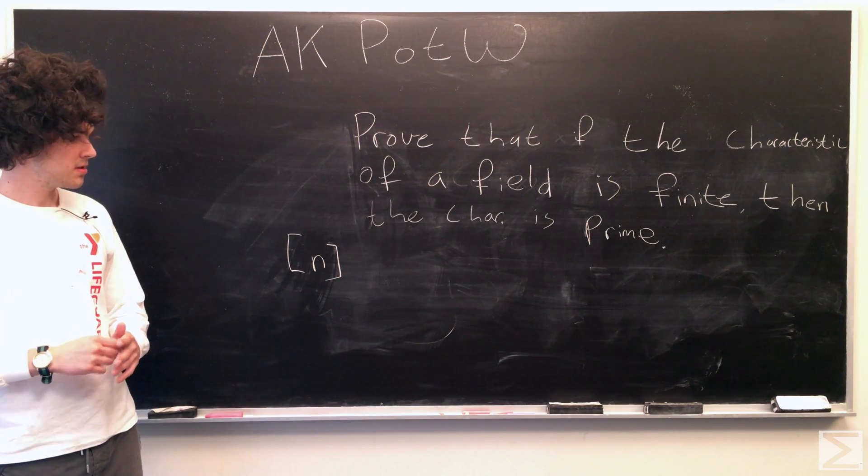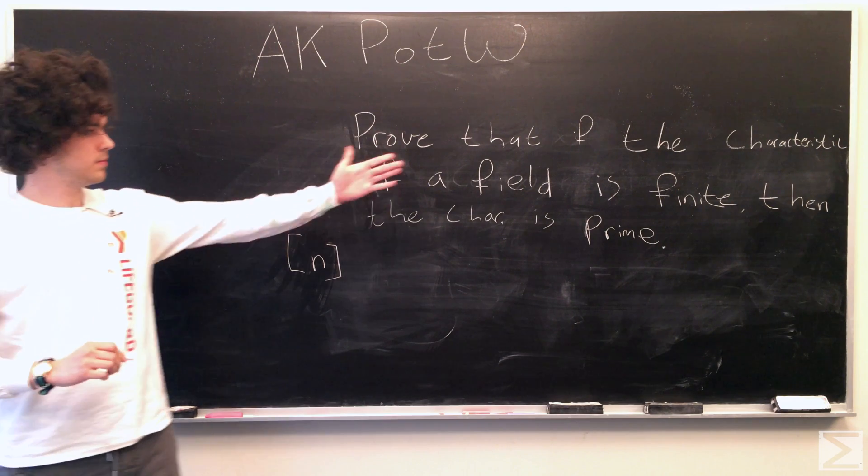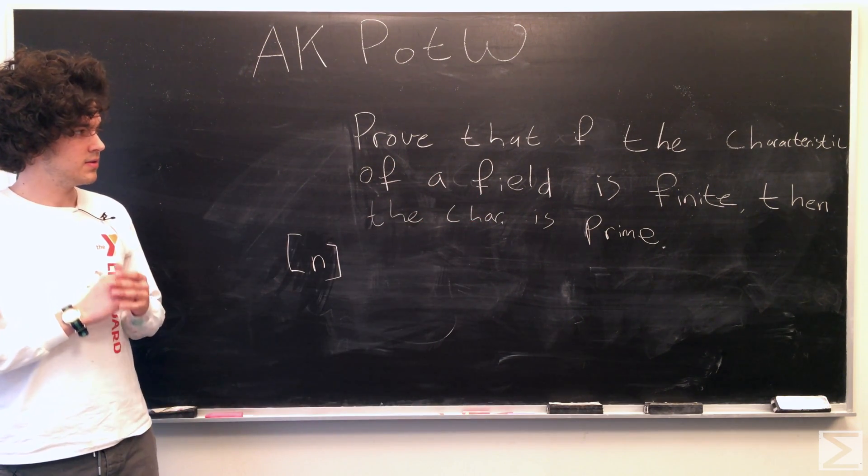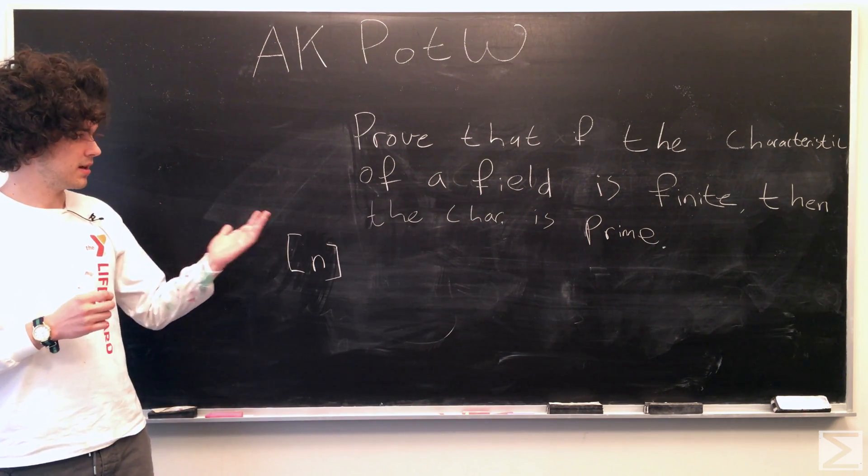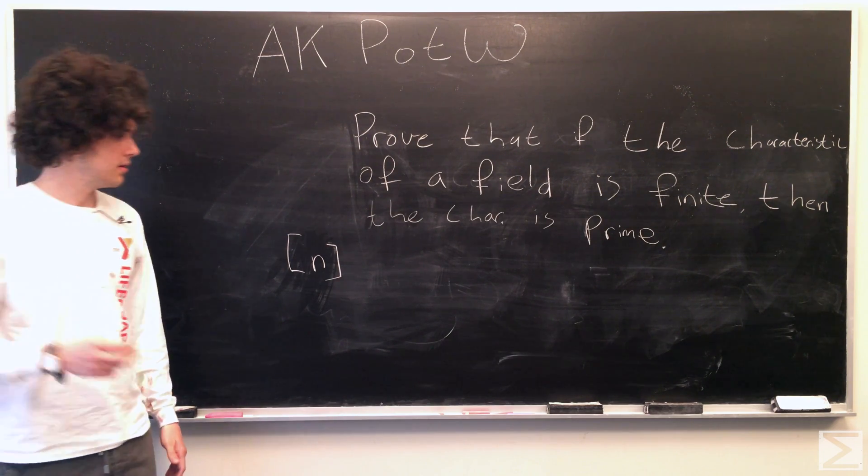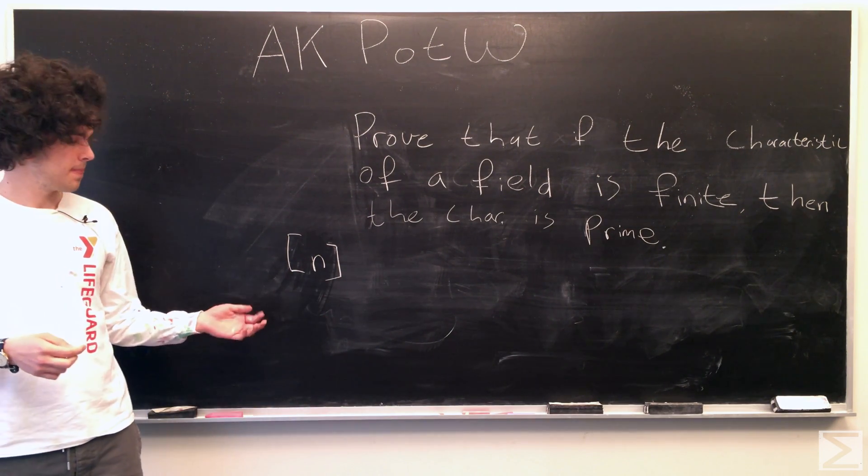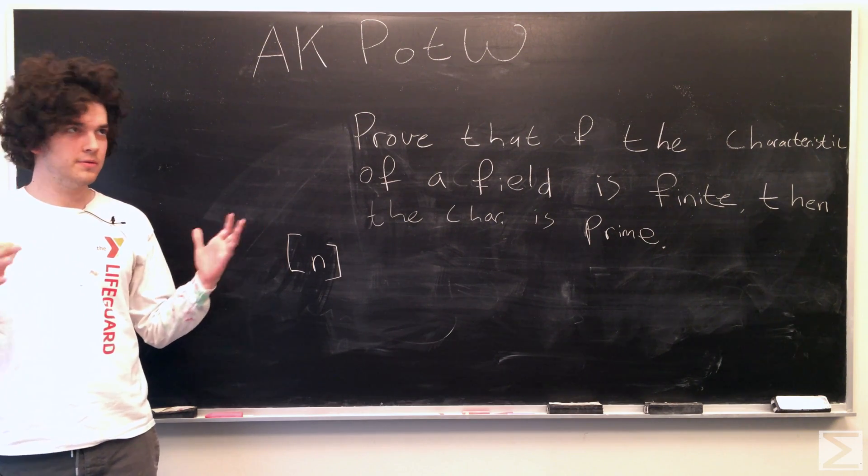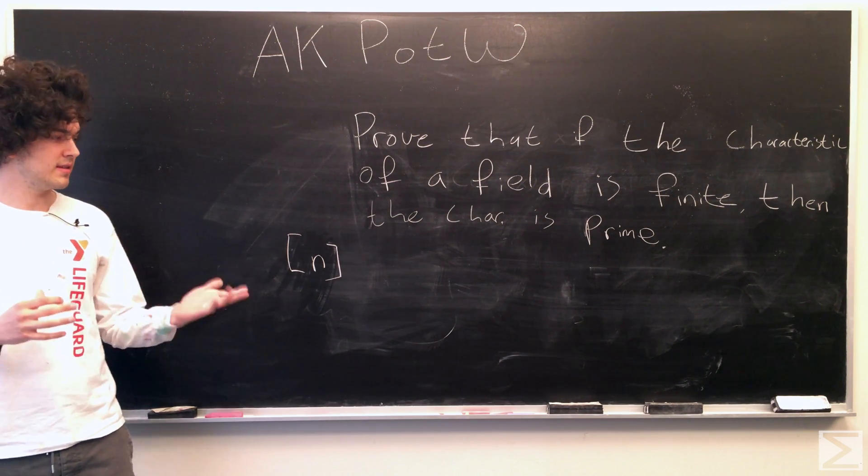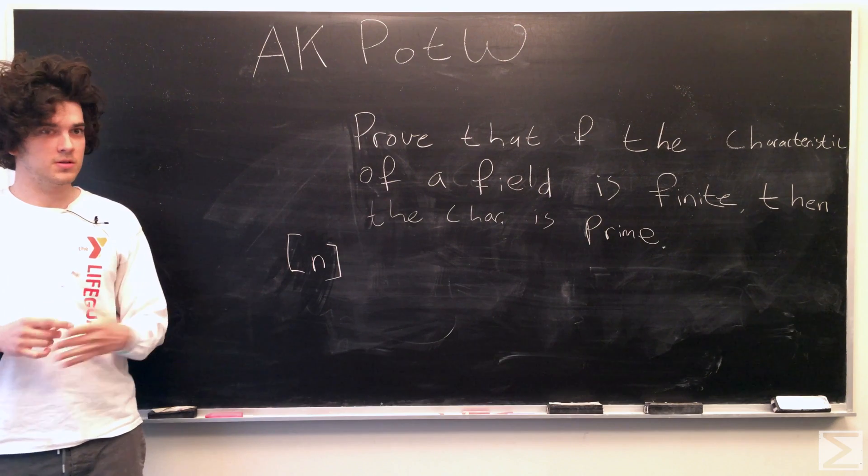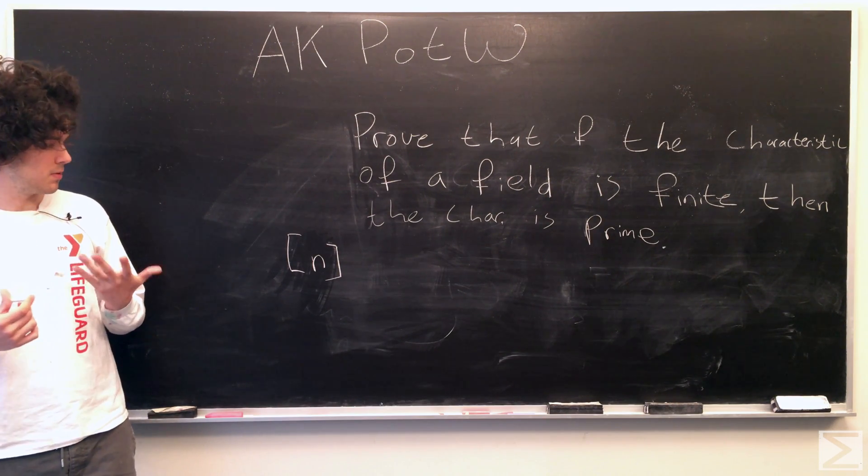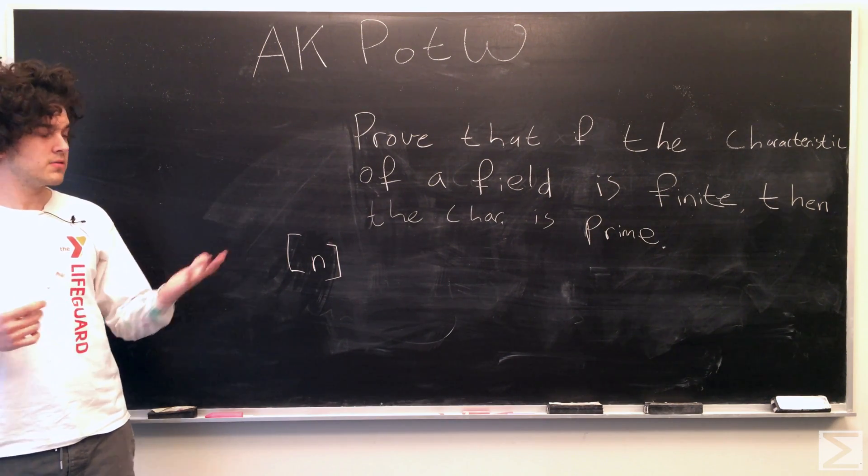So when we start, we're going to assume that this field is finite, meaning that this n is the smallest such number you can add up of multiplicative identities to get the additive identity. And that's important that it's the smallest number because that's what we're going to use to prove that it has to be prime.